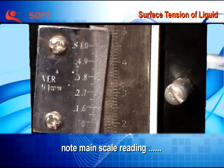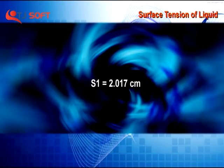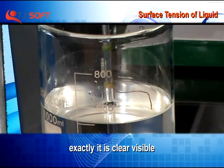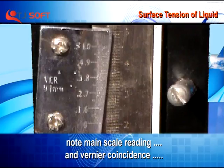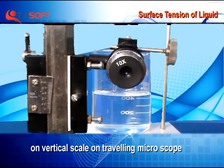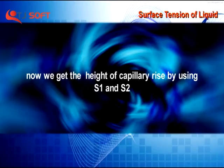Note the main scale reading and vernier coincidence. On the vertical scale of the travelling microscope, S1 is equal to 2.017 cm. Adjust the travelling microscope until the rise of water in the capillary tube is clearly visible. Note the main scale reading and vernier coincidence. On the vertical scale, S2 is equal to 7.291 cm. The height of capillary rise is obtained using S1 and S2.